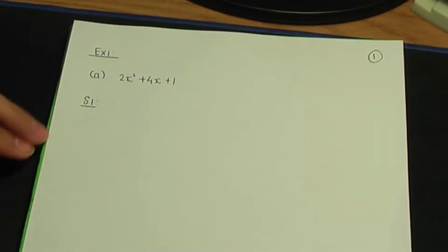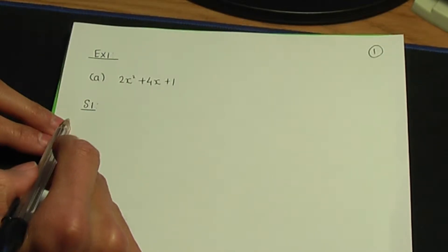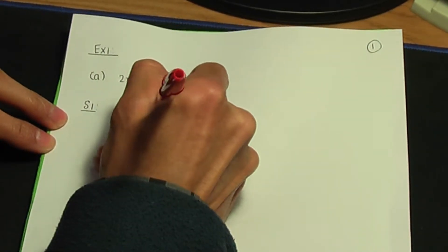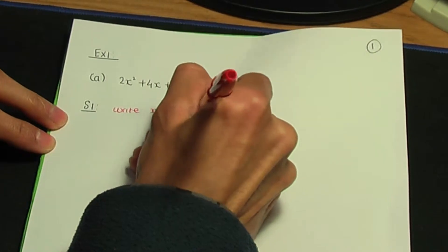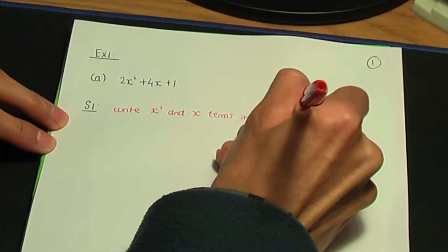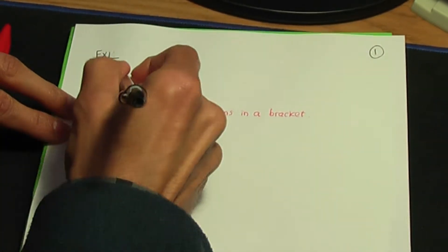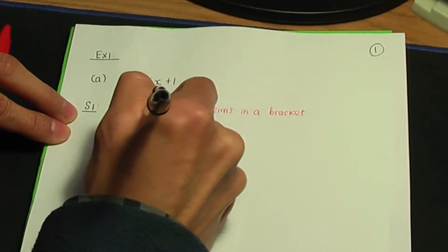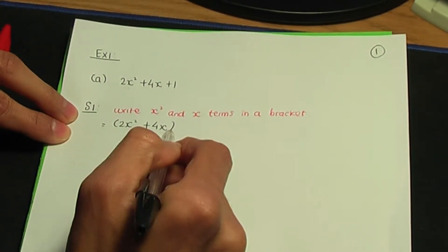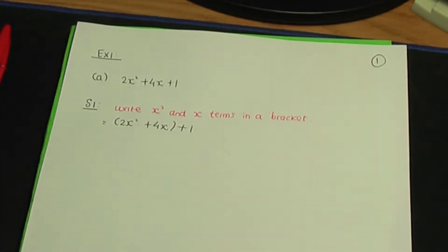In step number one, all we need to do is write the x squared term and the x term in a bracket. So we need to write the 2x squared term and the 4x term, encasing them in a bracket, leaving the plus 1 outside. That is what step one is about.